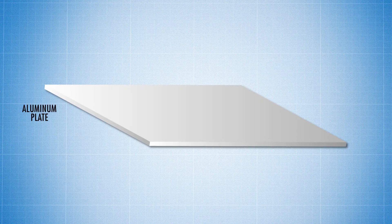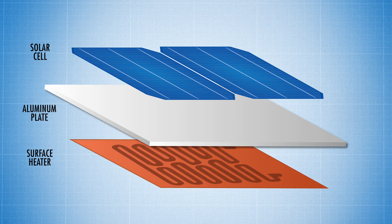Here's an example of an aluminum plate being used to heat a solar cell to test for its operating temperature range.